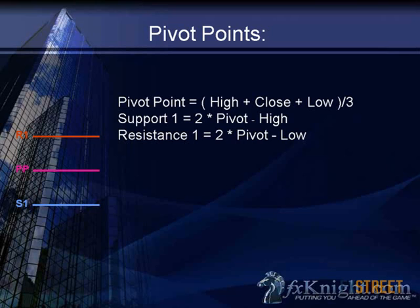On my indicator, the resistance ones above are colored red — that's a reminder that you've reached the top and it might be time to look at shorts. Everything above is red, everything below is blue, the middle is purple. That's how you can orientate your eye on the chart.